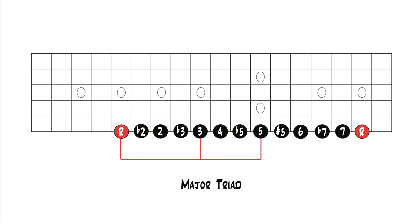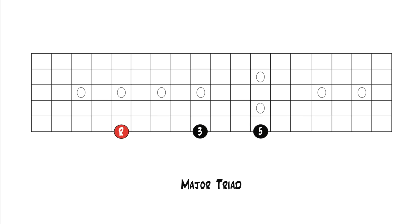Let's start with the major triad, which is built with a root, a major third, and a perfect fifth. These are the intervals in a major triad, but this is showing it on one string and you can't play a chord on one string — you can only play single notes on one string. So to turn this into a chord that you can actually play, you have to move the notes onto different strings.